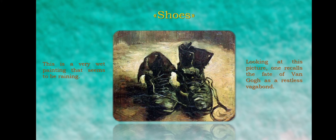It took Van Gogh several weeks to find suitable shoes for the painting. The artist put them on and worked for a long time in the rain. Arriving home, he placed the shoes on the floor and decided that now they were ready to be transferred to the canvas.